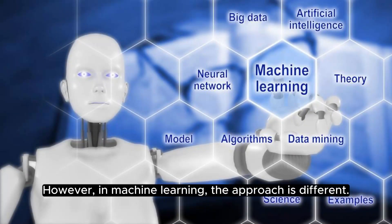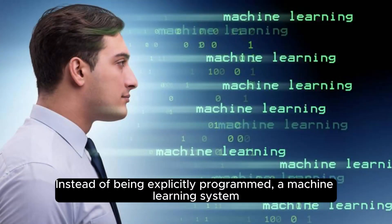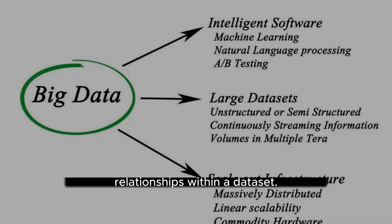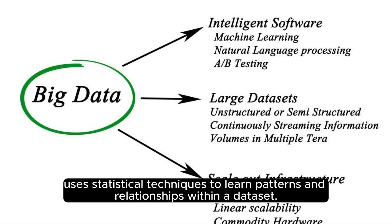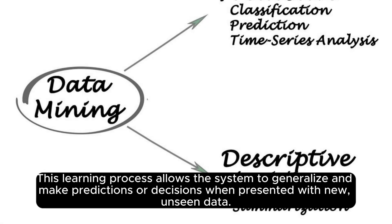However, in machine learning, the approach is different. Instead of being explicitly programmed, a machine learning system uses statistical techniques to learn patterns and relationships within a dataset. This learning process allows the system to generalize and make predictions or decisions when presented with new, unseen data.